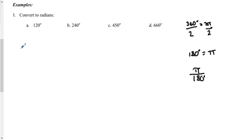So for A, I'm going to take 120 degrees and multiply that by pi over 180. So that will give me 120 degrees pi over 180 degrees. I'd like to simplify this if I can.